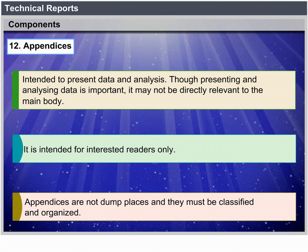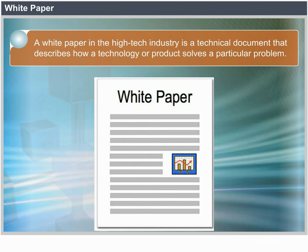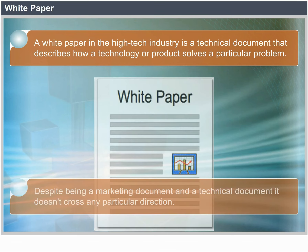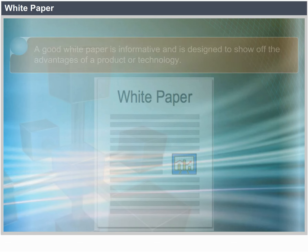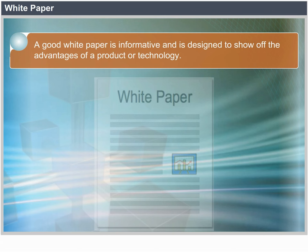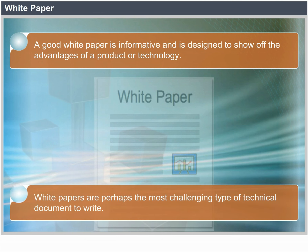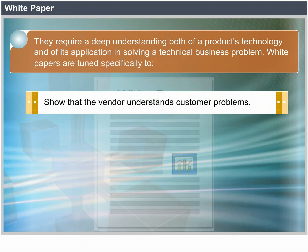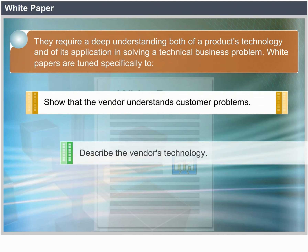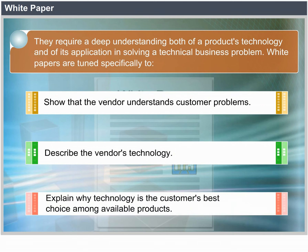White Paper. A white paper in the high-tech industry is a technical document that describes how a technology or product solves a particular problem. It is both a marketing document and a technical document, yet it does not go too far in either direction. A good white paper is informative and is designed to show off the advantages of a product or technology. White papers are perhaps the most challenging type of technical document to write — they require a deep understanding both of a product's technology and of its application in solving a technical business problem. White papers are tuned specifically to show that the vendor understands customer problems and to explain why that technology is the customer's best choice among available products.